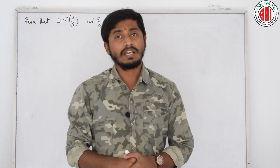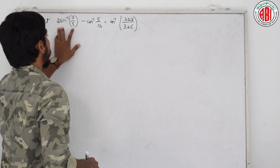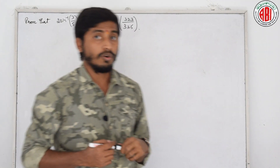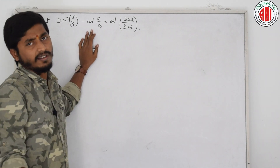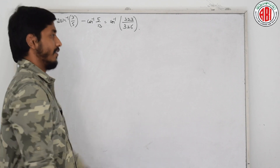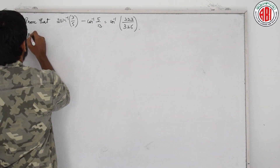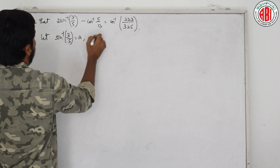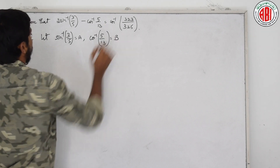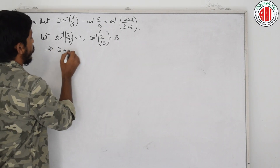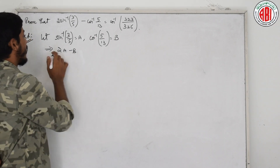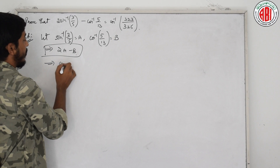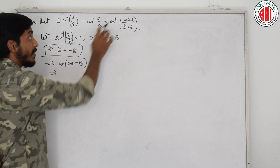Let us move to the next problem: prove that 2 sin inverse 3 by 5 plus cos inverse 5 by 13 equals cos inverse 323 by 325. We assume sin inverse 3 by 5 as a and cos inverse 5 by 13 as b, so the expression becomes 2a plus b. Since there is cos inverse on the right-hand side, we apply cos to both sides: cos of 2a plus b. Using the formula cos A minus B equals cos A cos B plus sin A sin B, this expands to cos 2a times cos b plus sin 2a times sin b.